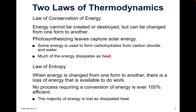Photosynthesizing leaves capture solar energy, which we'll talk about next when we go through photosynthesis. The process of photosynthesis is a way for the plants to feed themselves, to give themselves energy. The plant doesn't eliminate the energy that the sun gives it — it just turns it into carbs, CO2, and water so it can give itself nutrients. Most of the energy that goes through an ecosystem comes off as heat.